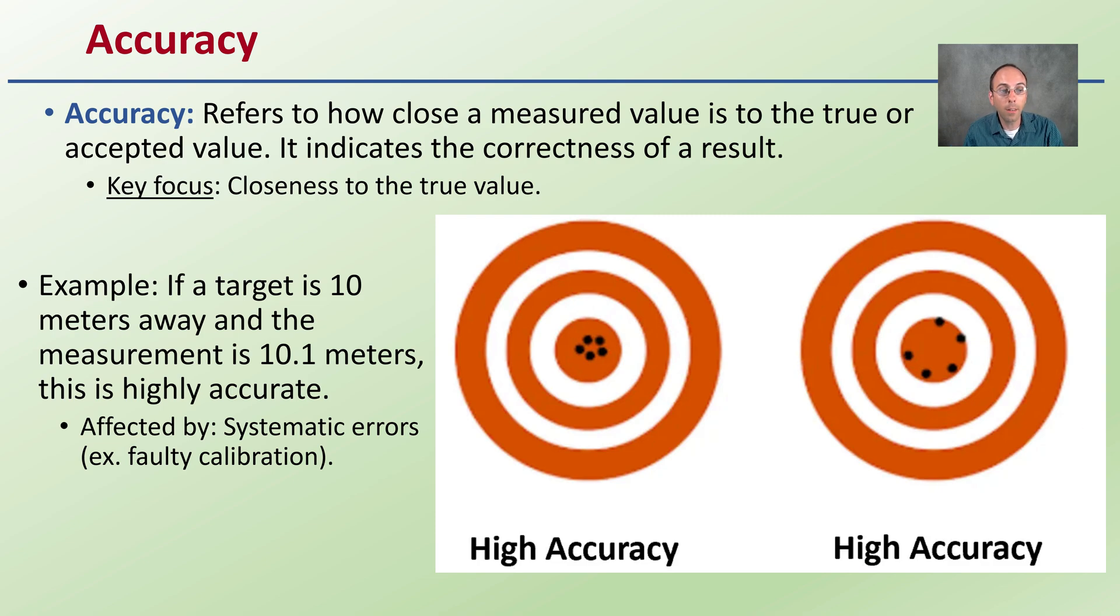For example, if a target is 10 meters away and the measurement is 10.1 meters, this is highly accurate. It's affected by systematic errors such as faulty calibration of the equipment that you might be utilizing.